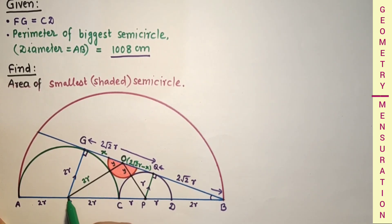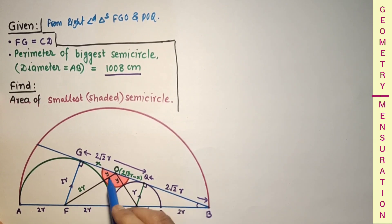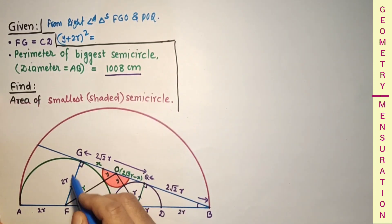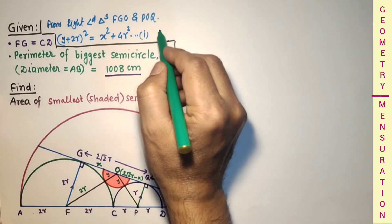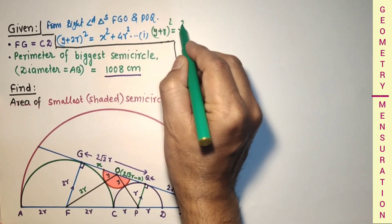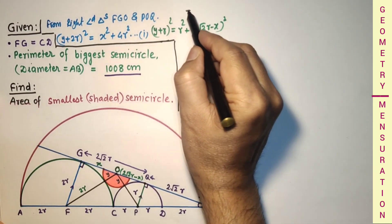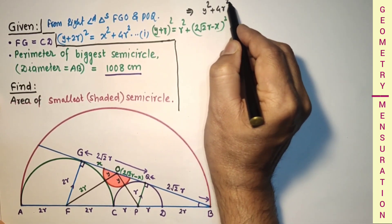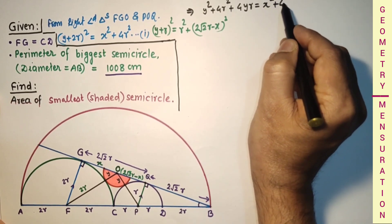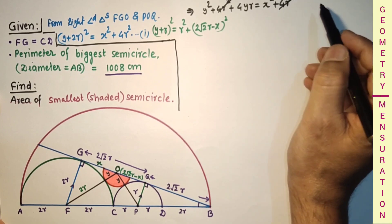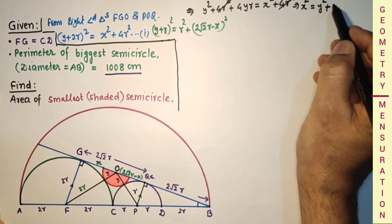From right angle triangle FGO and triangle POQ, by the Pythagoras theorem: (y + 2r)² = (2r)² + x² ... (equation 1). From the other right angle triangle: (y + r)² = r² + (2√2·r − x)². Expanding equation 1: y² + 4r² + 4yr = x² + 4r², so the 4r² terms cancel, giving x² = y² + 4yr.